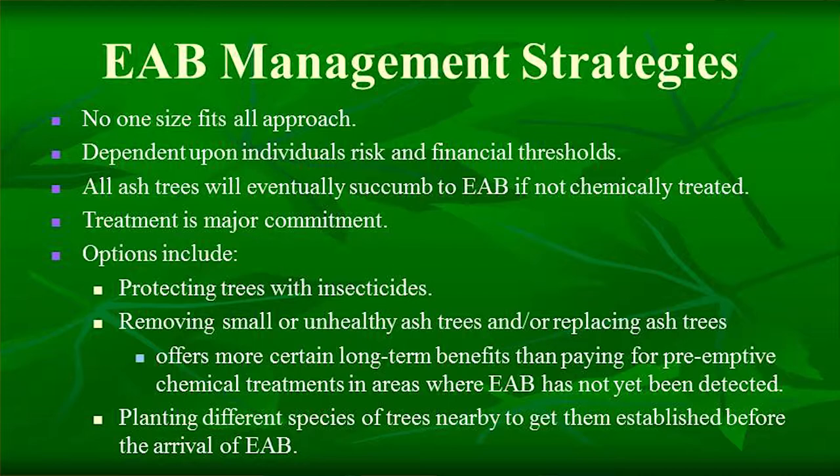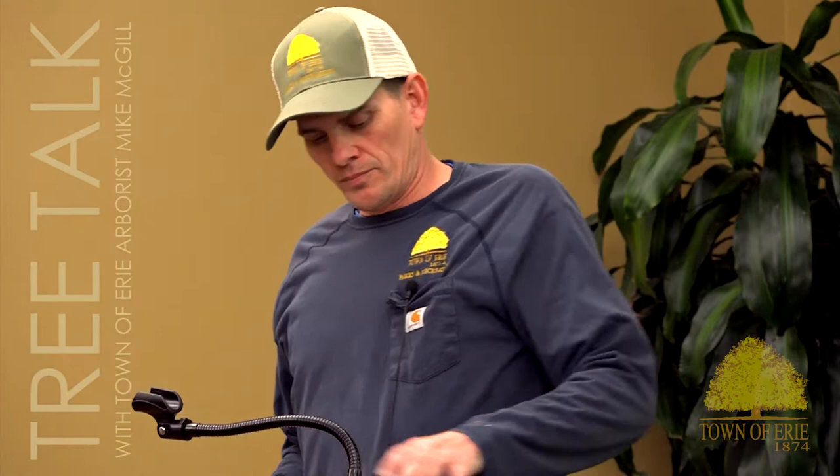Another strategy is planting different species nearby to get them established before EAB arrives. I recommend this to people who have an ash tree but don't want to spend money treating it. For example, an eight-inch ash in poor shape — I'll recommend under-planting: planting a new tree in close proximity so that if emerald ash borer comes and kills the ash tree, you already have a decent-sized tree growing up underneath. I can't tell you today when your Erie ash tree will die — it could be 10, 20, or 25 years. Ultimately, figure out what works best for you.